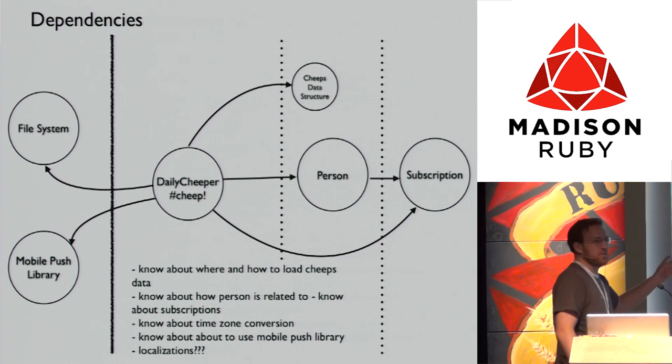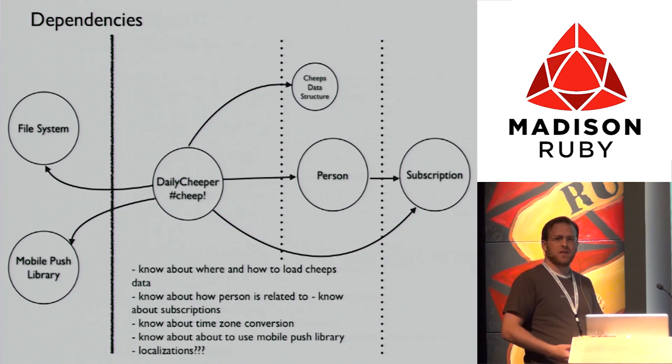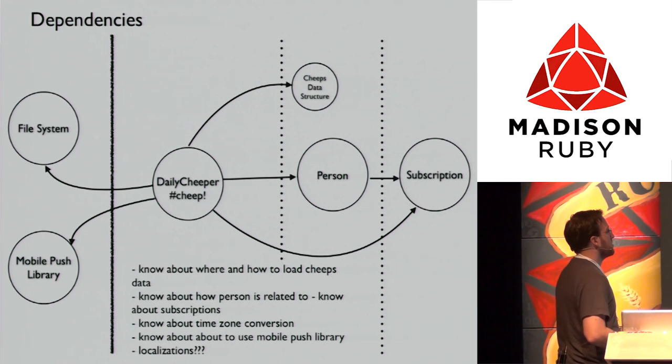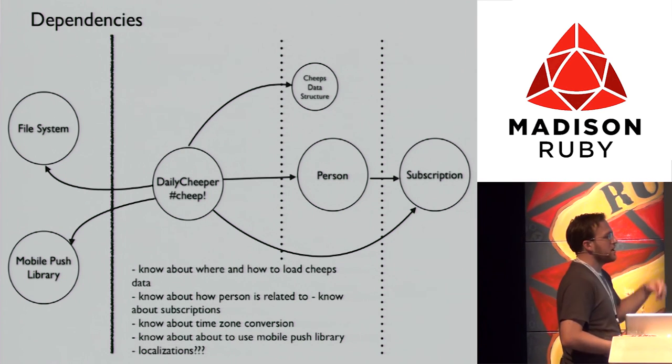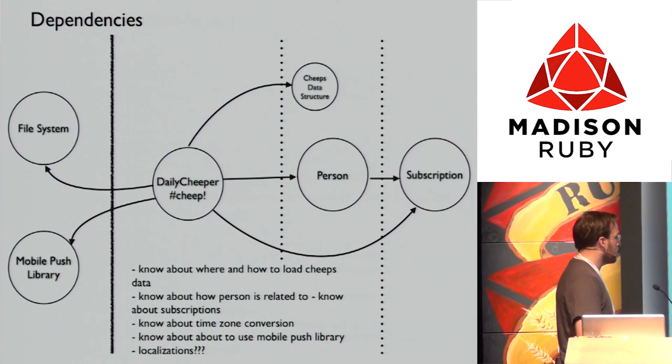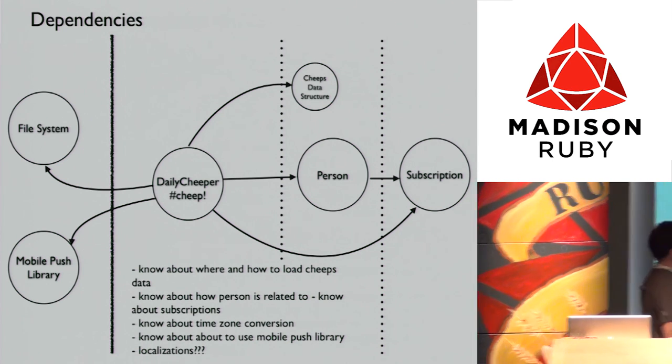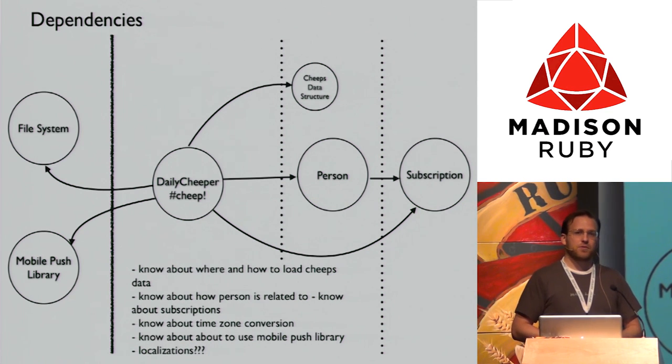This is what probably Steve saw. Our DailyCheaper actually does a lot. It talks to the file system—we're hard-coded to a path, reading out of the file system, which makes testing kind of suck. It also talks to the mobile push library that sends the cheaps. We know about the cheaps data structure, loading that from a YAML file. We're talking directly to the person, talking to the class interface for person to find people in their subscriptions. It also knows about how person and subscription are related and some technical details about how subscriptions work.